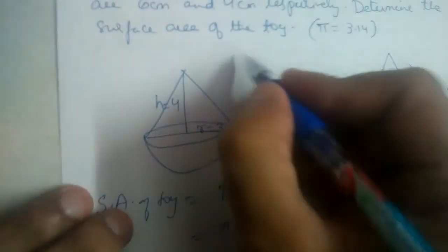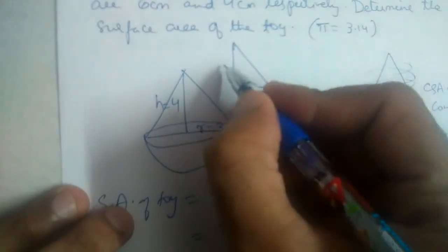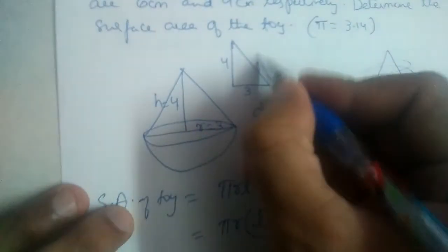Okay, we should find the value of l. So h is equal to 4 given here, r is equal to 3, and what is l?